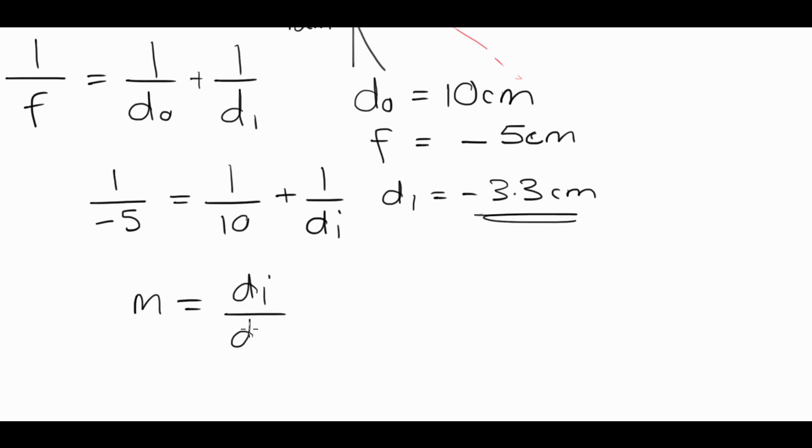m is equal to di divided by do. Negative 3.3 divided by 10. Just move decimal place 1 back. Negative 0.33. Again, the negative sign doesn't really mean a lot. It just means that it's virtual. So the magnification is 0.33, which tells us that it's almost three times smaller. It's diminished.